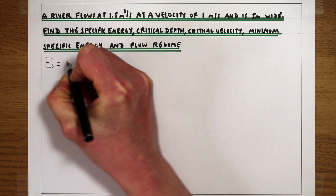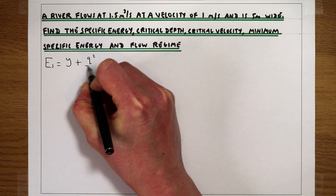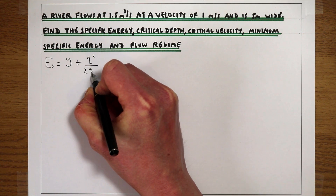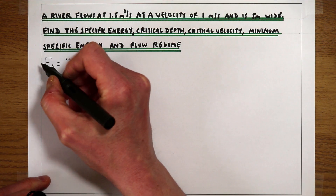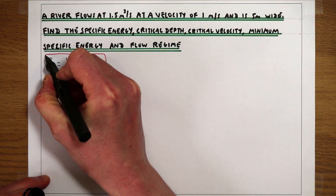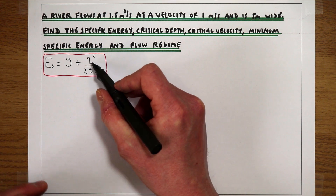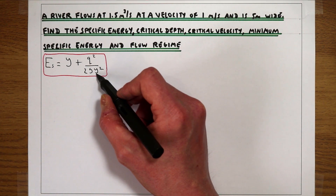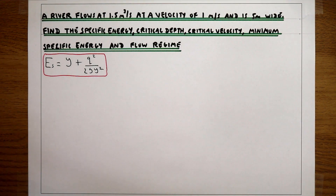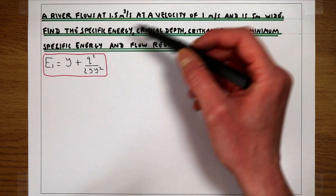The equation for specific energy Es is the flow depth y plus the flow per metre width squared over 2gy squared. To work out the specific energy, you need the flow depth and you need the flow per unit width squared, divided by 2 times g times y squared. We're not actually given either of those two terms directly.